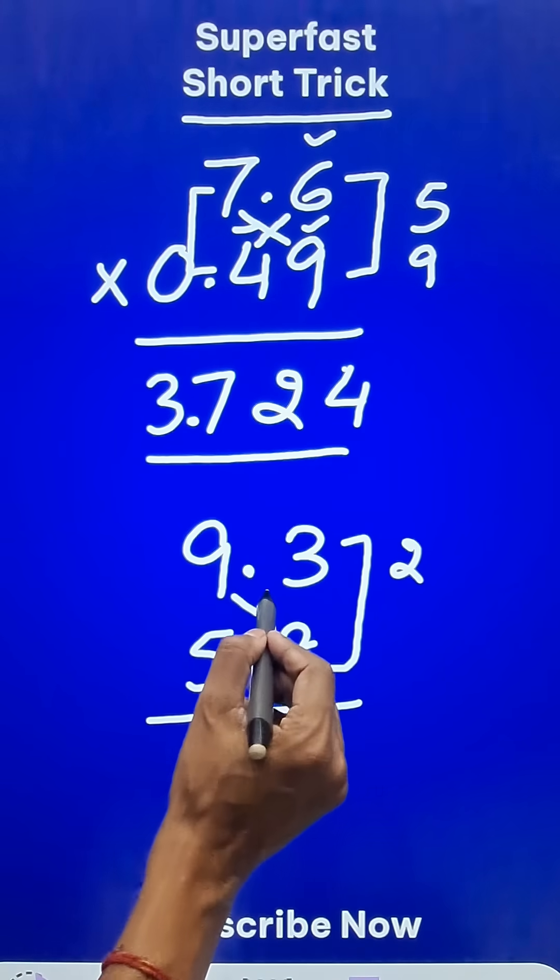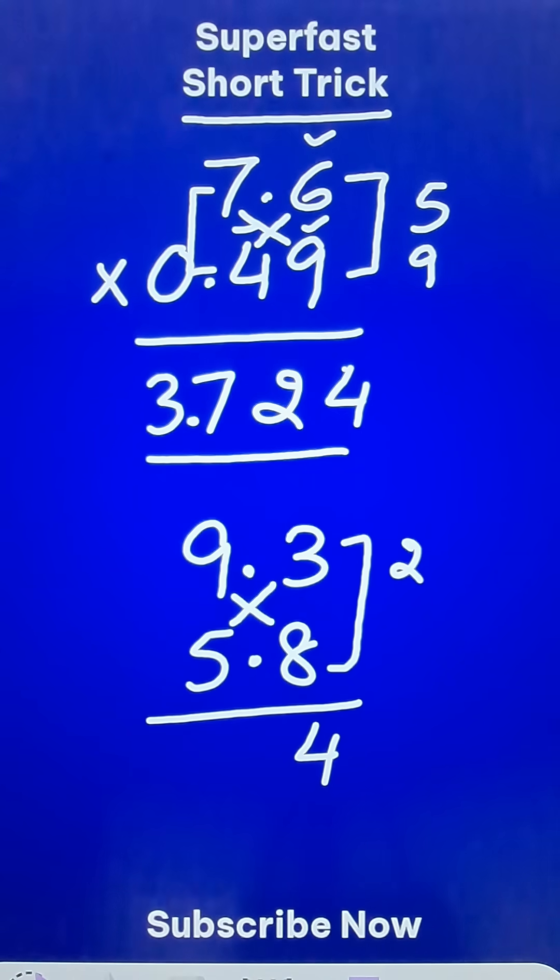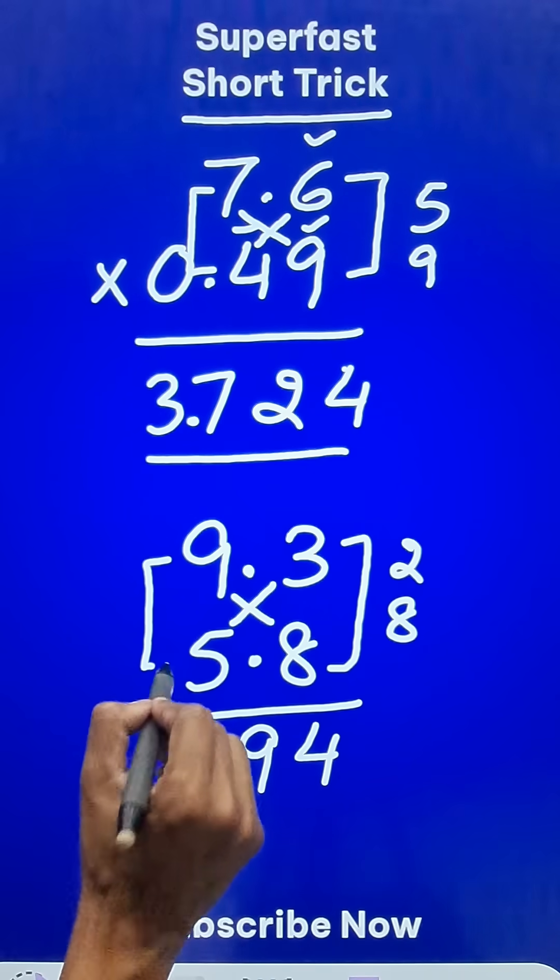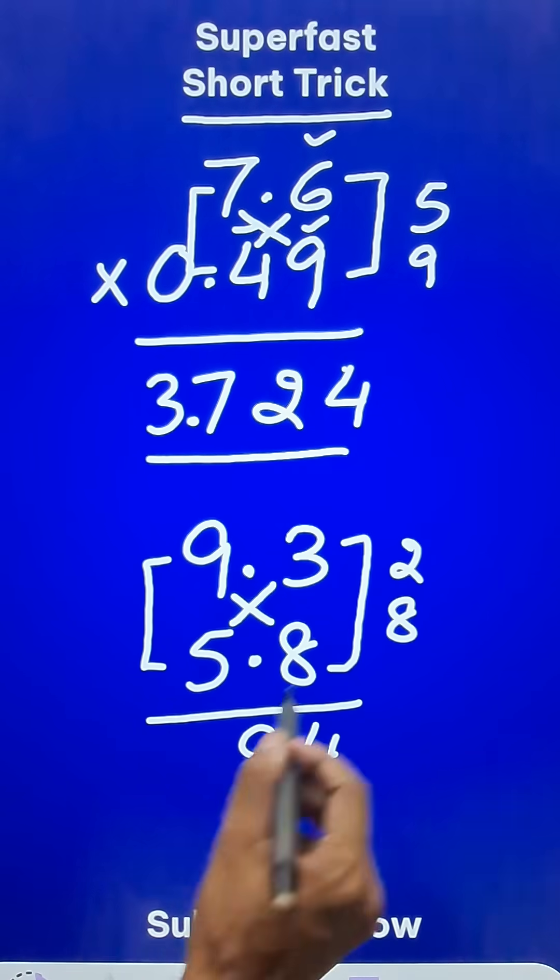9 times 8 is 72 and 3 times 5 is 15. 72 and 15 is 87 plus 2 is 89. So 9 and an 8 carry, and then 9 times 5 is 45 plus 8 is 53.